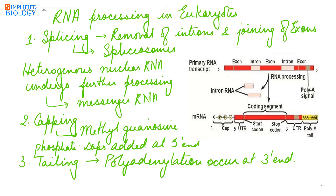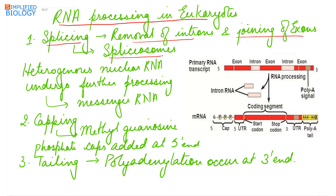RNA undergoes processing in eukaryotes. The first step of processing is splicing. Splicing is the removal of introns and the joining of exons; it occurs with the help of spliceosomes, which are ribonucleoprotein complexes. The introns are removed and the exons are joined to each other.